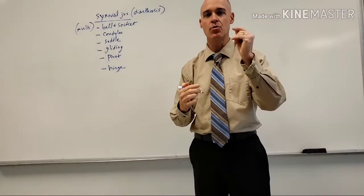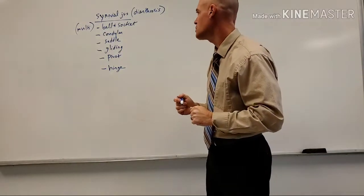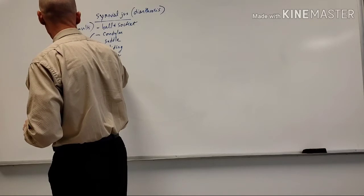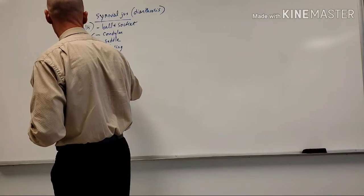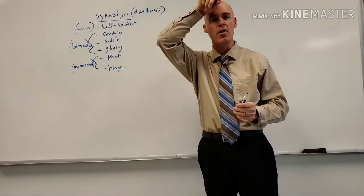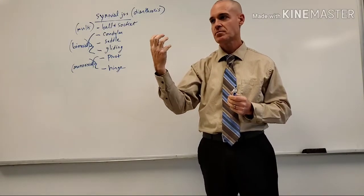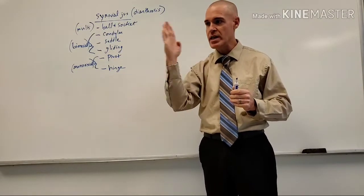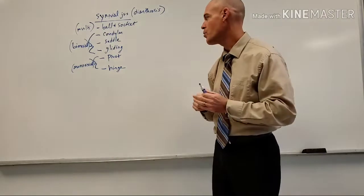The condylar, saddle, and gliding joints are considered bi-axial. The pivot and hinge are considered mono-axial, meaning they have only one plane of motion. A pivot motion is just a spinning — one axis — and a hinge likewise has only one plane of motion.